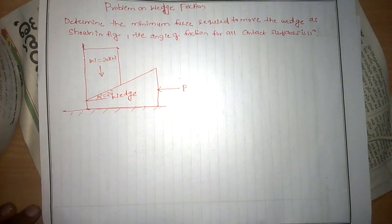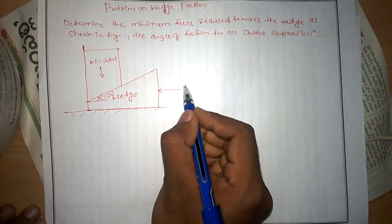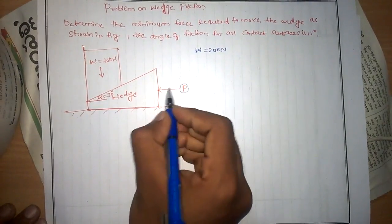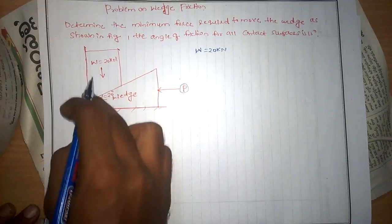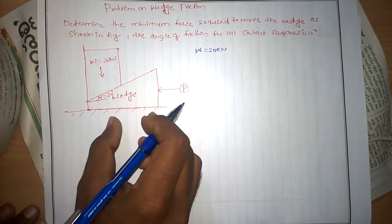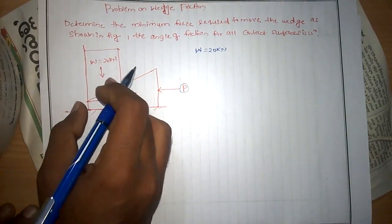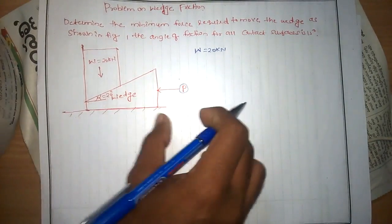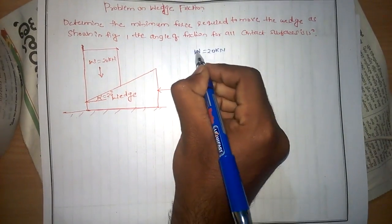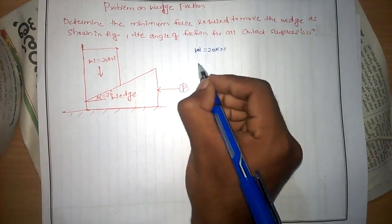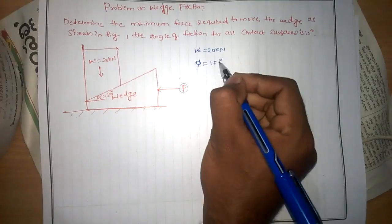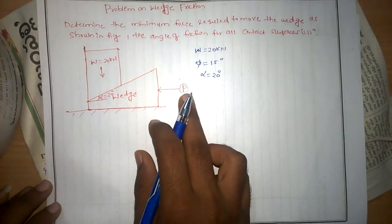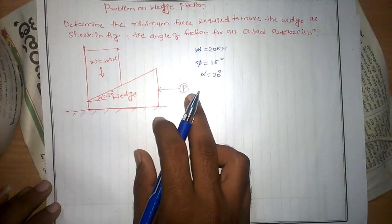Here is the problem based on wedge friction. We are asked to find the force P required to move this wedge, or to lift the load. The weight is 20 kN acting downward. When we apply force P on this wedge, the wedge moves towards the left, and the load on the wedge moves upward. Given: W = 20 kN, angle of friction = 15 degrees for all surfaces, and alpha = 20 degrees. Our aim is to find force P.